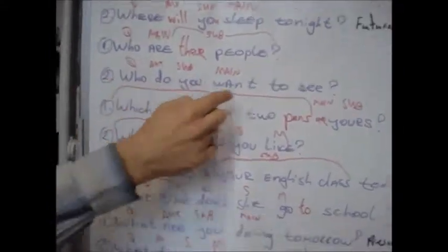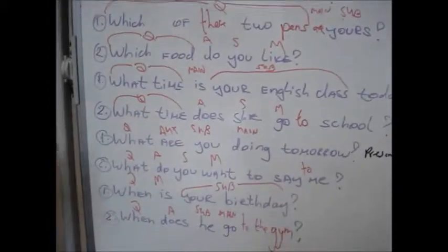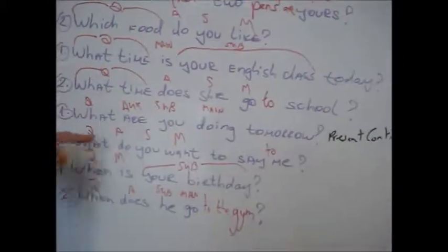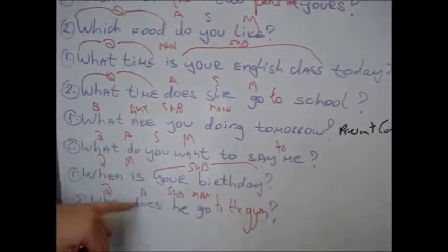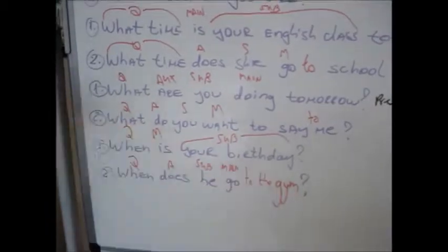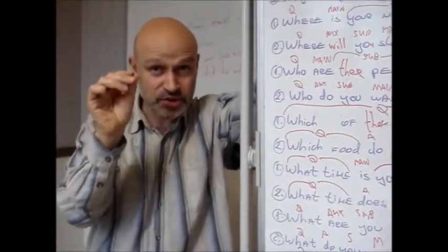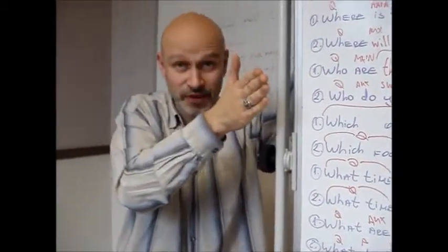For example: 'Who do you want to see?' 'Which food do you like?' 'What time does she go to school?' 'What time do you want to say to me?' 'When does he go to the gym?' So when you use the present simple and you use the verb to do, it's an auxiliary verb. Question word, auxiliary verb, subject, main verb.